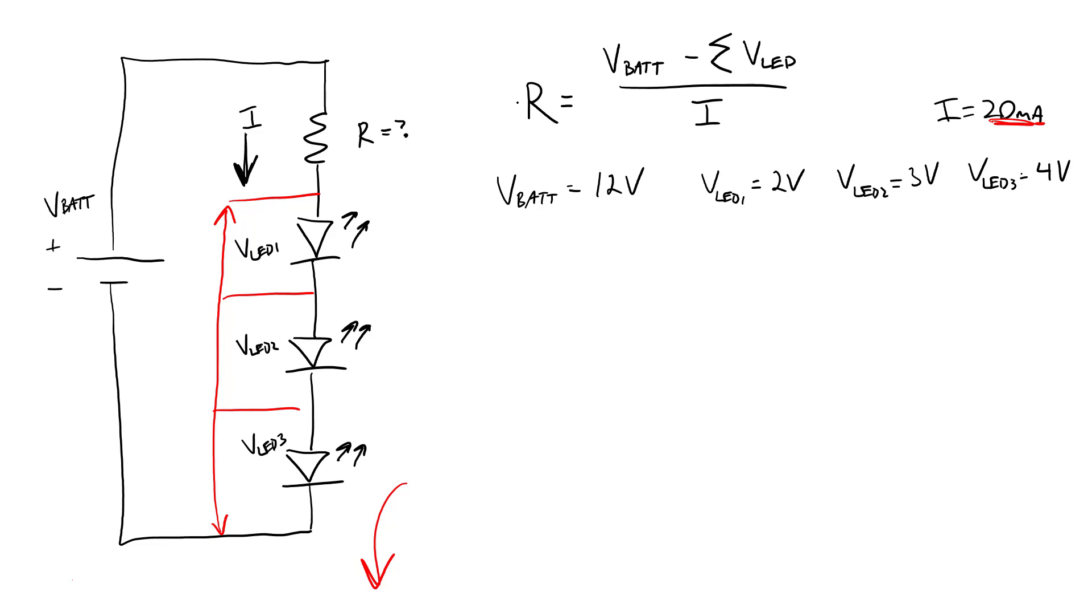But assuming your LED currents are all the same, you can go ahead and plug numbers into this equation to solve for that resistor value. So R equals the battery voltage, which is 12 volts, minus the sum of all the LED voltages. So we have two volts plus three volts plus four volts divided by the desired current of 20 milliamps or 0.02 amps. That is going to give a resistor value of 150 ohms.